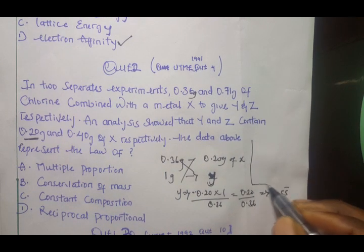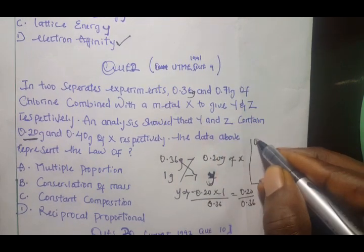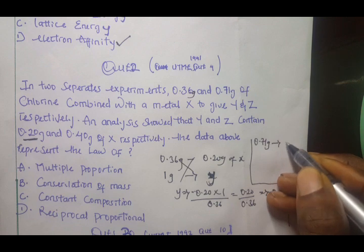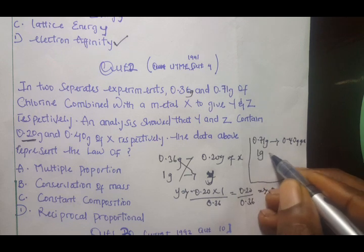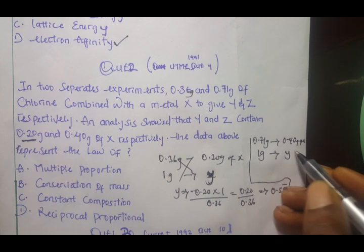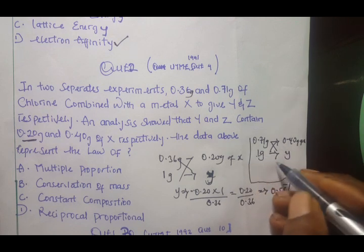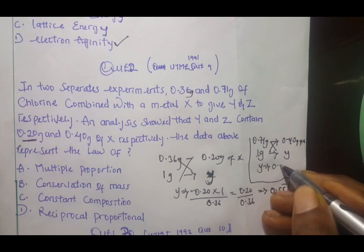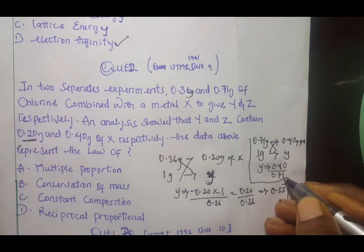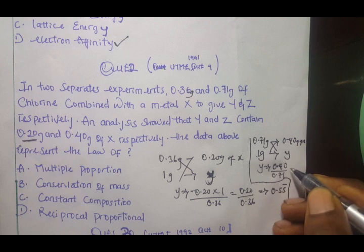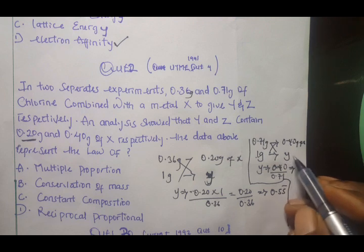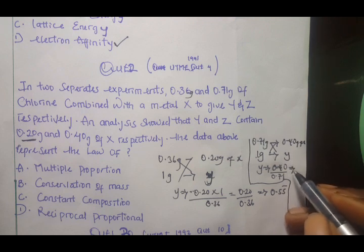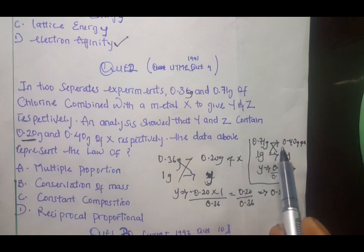So that's the first one. The same sample also has the same process. It's having 0.71 gram of chlorine combined to give 0.40 gram of X. So I can now say 1 gram of this will also yield, I can use the same Y and cross multiply. So 1 times 0.40 gram of X would be 0.40 over 0.71. So when you calculate 0.40 divided by 0.71, we give us 0.56.